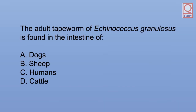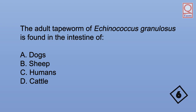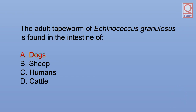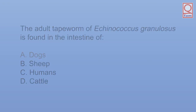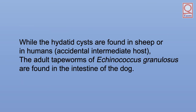The adult tapeworm of Echinococcus granulosus is found in the intestine of: A. Dogs. B. Sheep. C. Humans. D. Cattle. The answer is A. Dogs. While the hydatid cysts are found in sheep or in humans as the accidental intermediate host, the adult tapeworms of Echinococcus granulosus are found in the intestine of the dog.